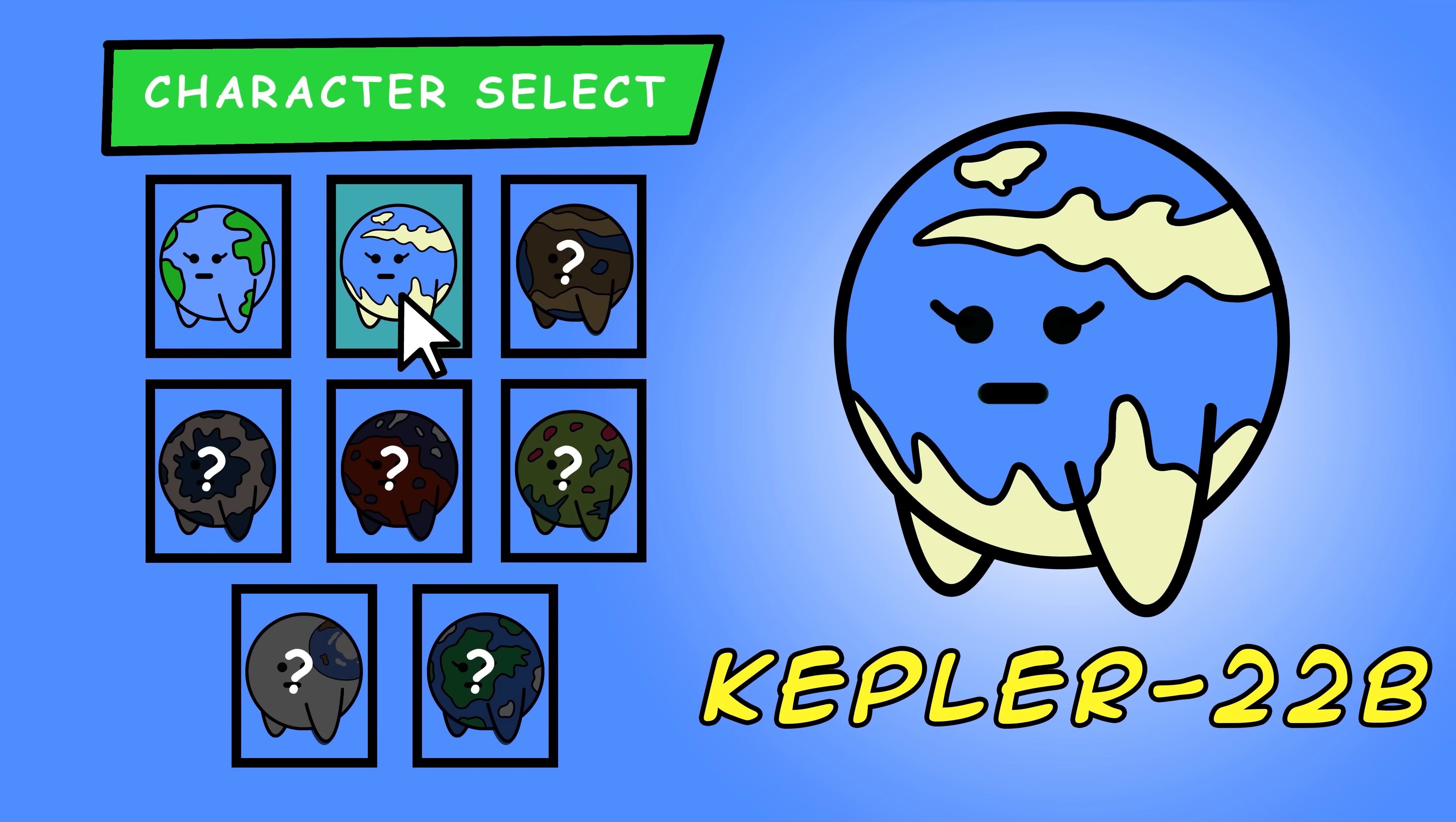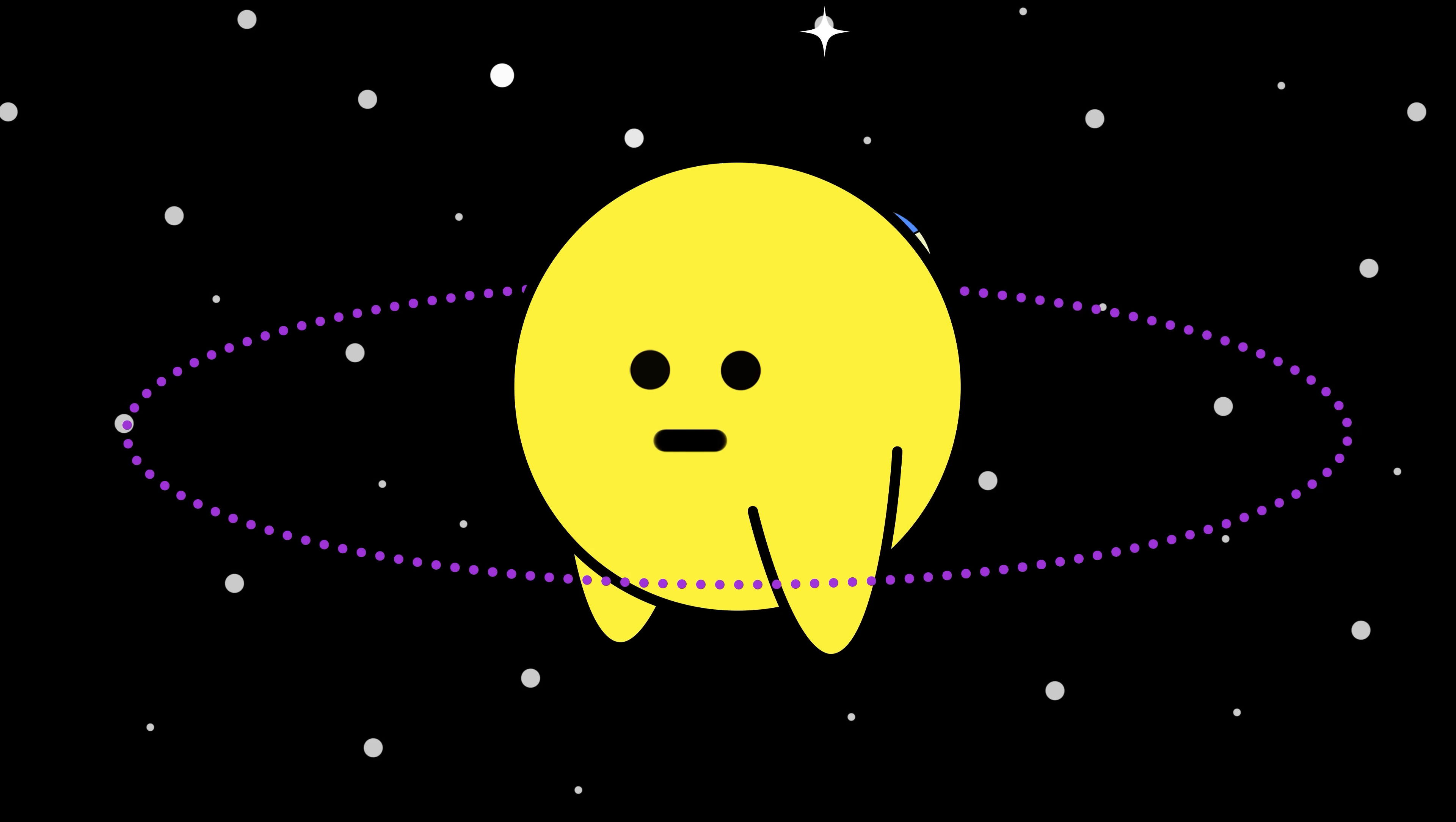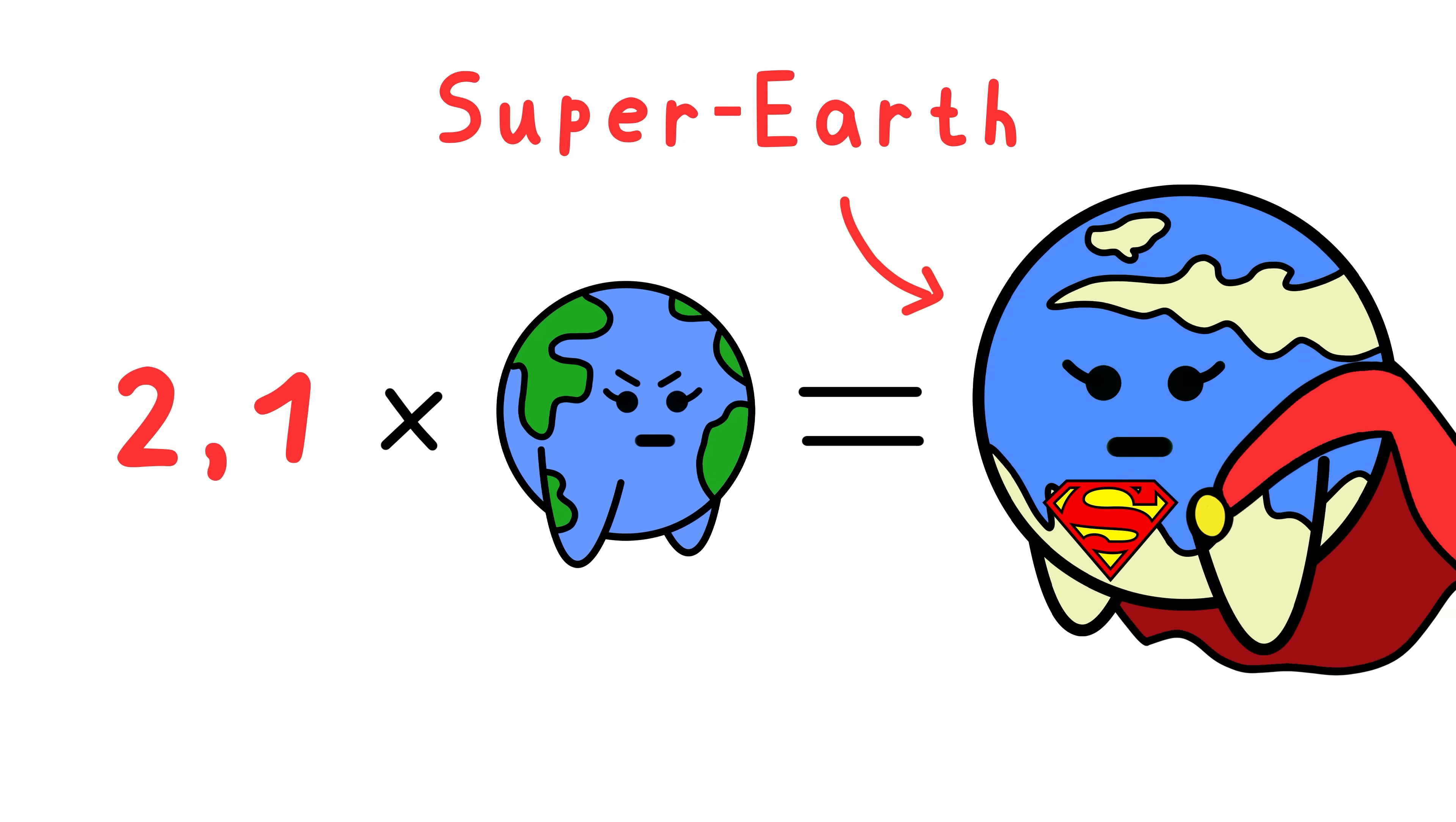So with that out of the way, let's first test out Kepler-22b, the very first planet ever found inside the habitable zone of a sun-like star. This star is about 620 light years away from Earth, and what makes it different from our sun is that it is slightly smaller and cooler, and its planet takes 290 days to orbit. That means if you were to live on this planet, you'd be a lot older than you are now, Kyle. Kepler-22b is about 2.1 times the radius of the Earth, which makes it a super-Earth.